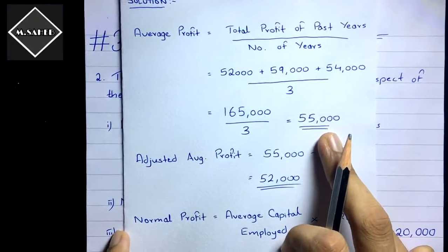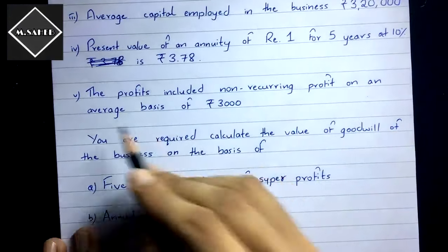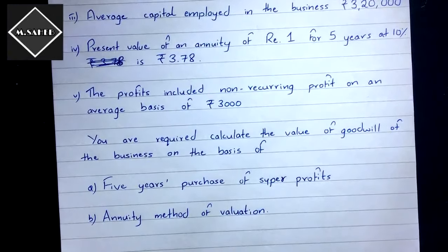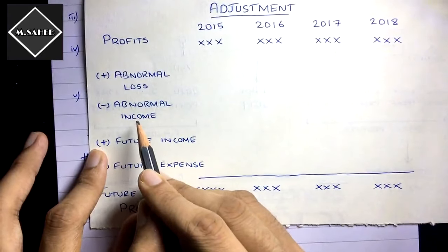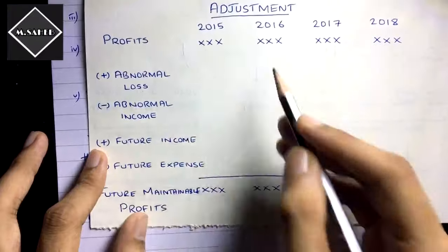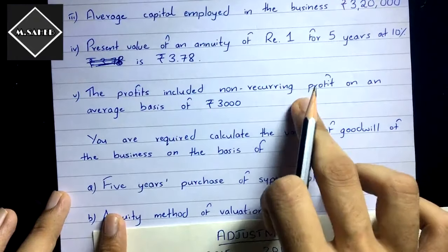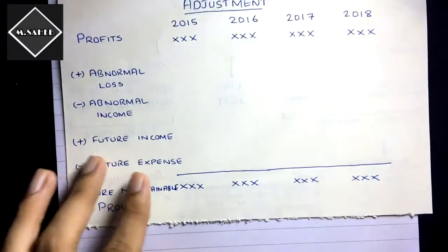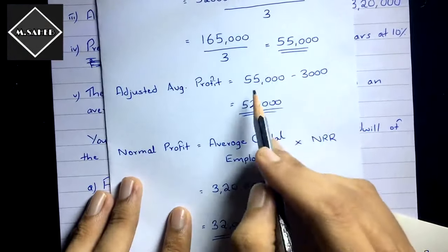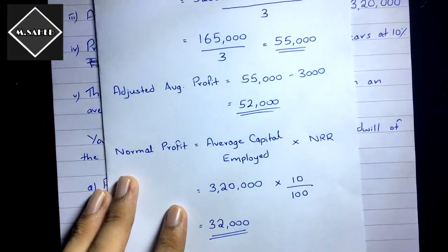Now we adjust the average profit. The question states that profits included non-recurring profit on an average basis of ₹3,000. Non-recurring profit is an abnormal income that arose in the past but won't arise in the future, so we subtract it. Since it is given on an average basis, we deduct ₹3,000 from the average profit of ₹55,000.